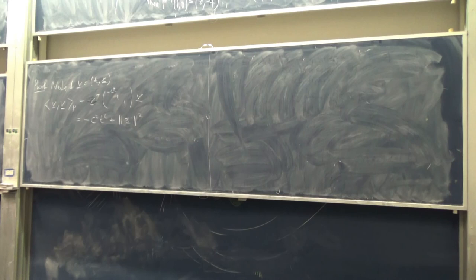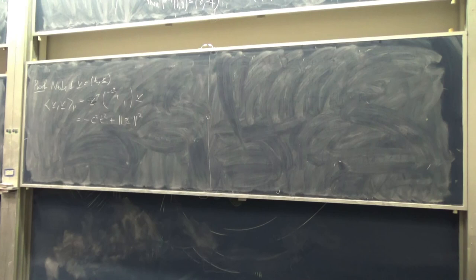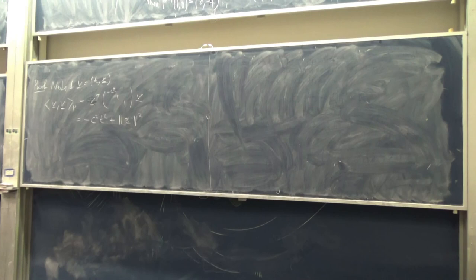One direction of the proof is easy: assuming those axioms and getting SR1' through SR4' is straightforward. The hard part is starting from the SR conditions and proving linearity and the pairing-preservation. After that, we'll go back and tidy up the issue of using the original SR3 rather than the stronger version.